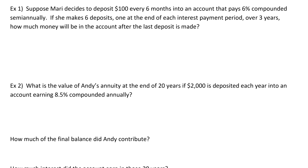Suppose Mary decides to deposit $100 every six months into an account that pays 6% compounded semi-annually. If she makes six deposits, one at the end of each interest period over three years, how much money will be in the account after the last deposit is made? We need to identify all five variables before putting them into the calculator.